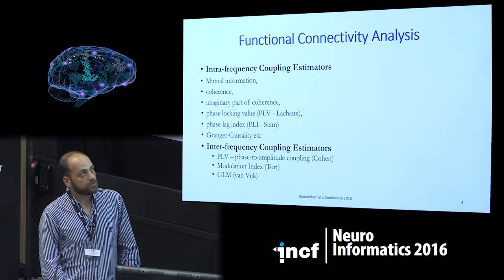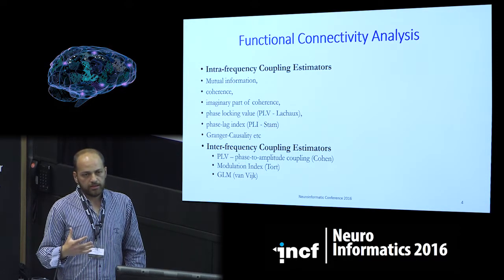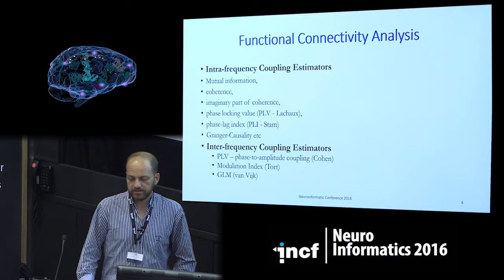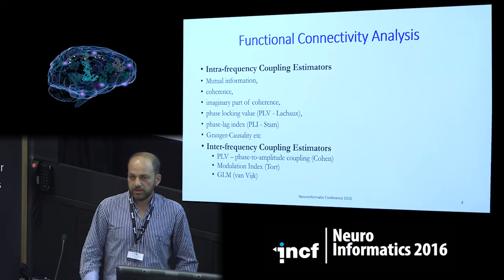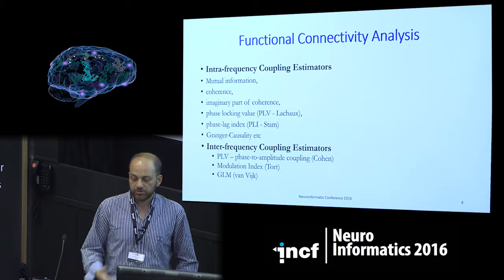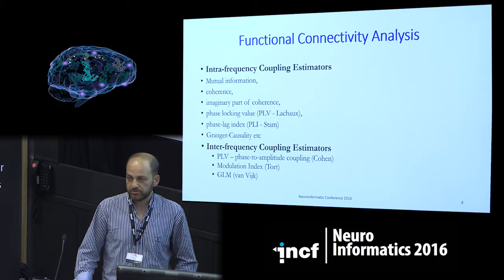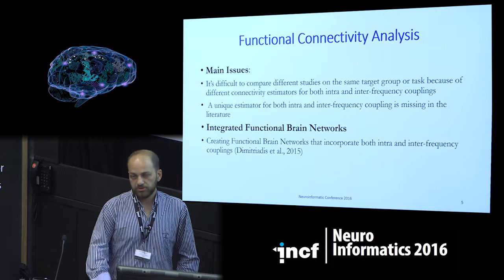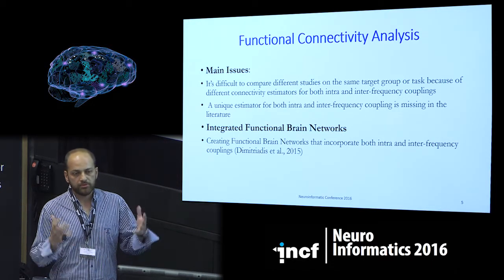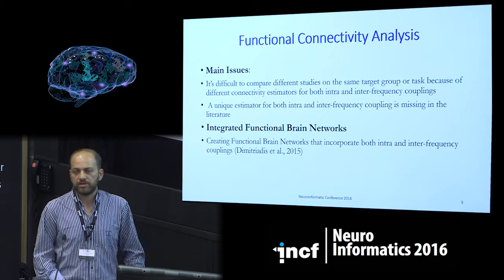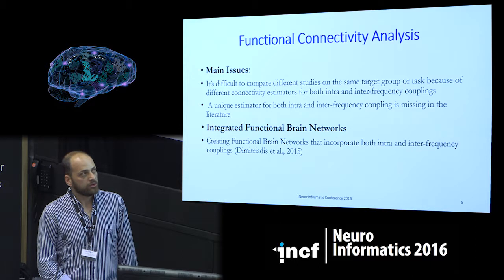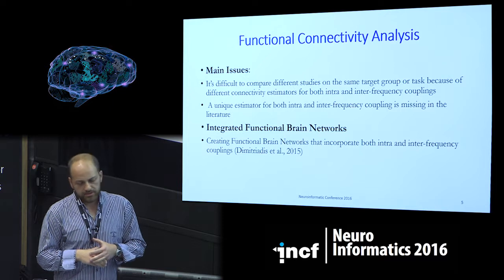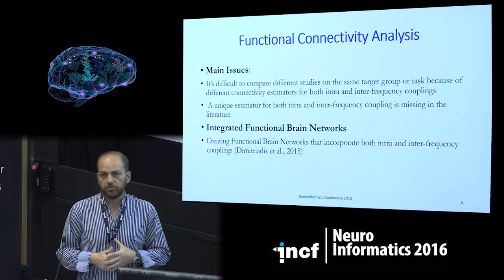There are numerous connectivity estimators that can change the interpretation of results — like mutual information, coherence, imaginary part of coherence, phase-locking index, Granger causality, and many others. Also, inter-frequency coupling methods like phase-locking value, modulation index presented by Tort, and GLM by Wink. The main issue is that even though two or more groups are working on the same dataset using MEG resting state or Alzheimer's disease with the same statistical algorithm, it is very difficult to find consistent results. This is a main issue in brain connectivity analysis using neuro-electromagnetic recordings.